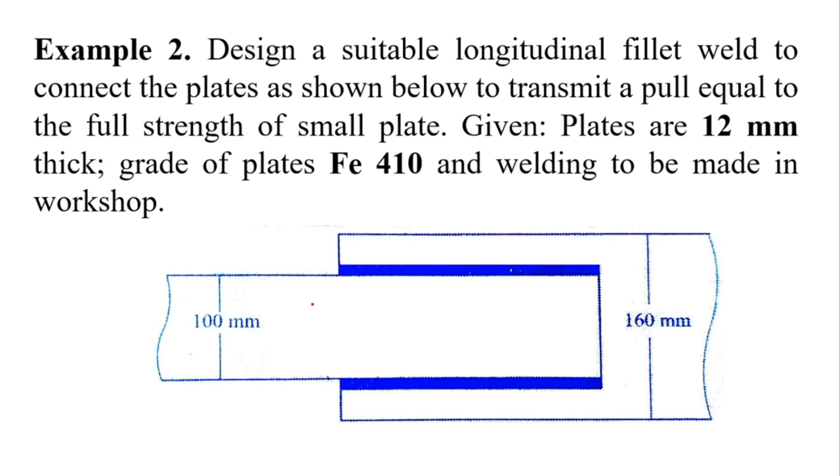So let's take example number 2. Design a suitable longitudinal fillet weld to connect the plates as shown below to transmit a pull equal to full strength of small plate. Given: plates are 12 mm thick, grade of plates Fe 410, and welding to be made in workshop.